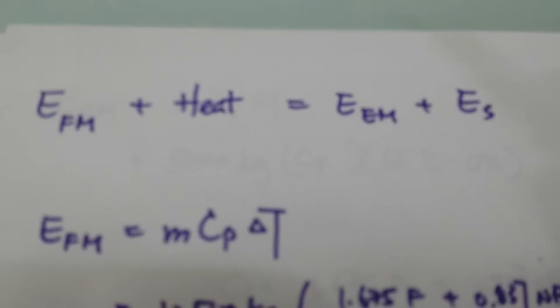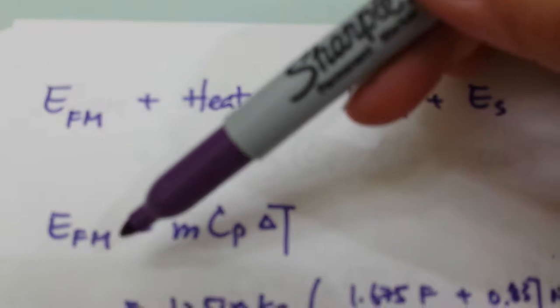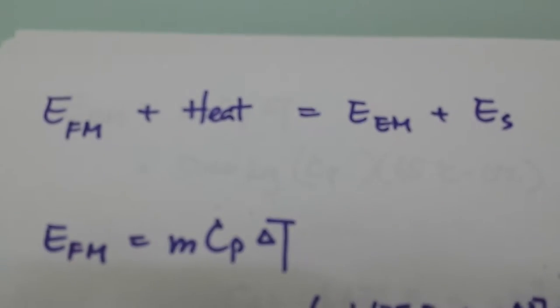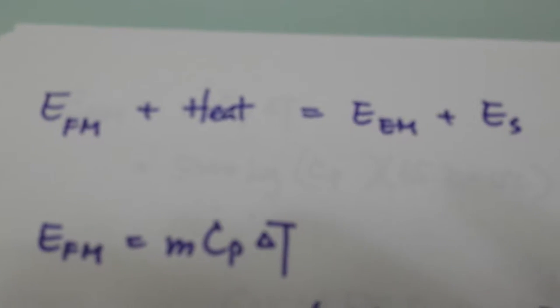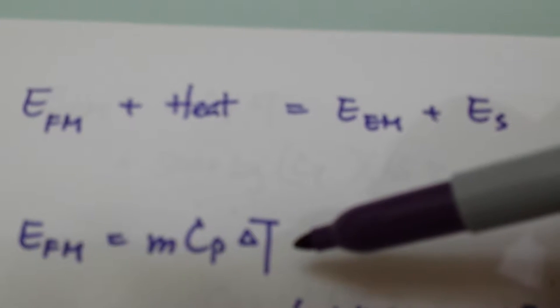Let's find out how much energy we need in the fresh milk. We are using this equation: mass times heat capacity times the relative temperature. The relative temperature here in this case is 65 degrees Celsius.